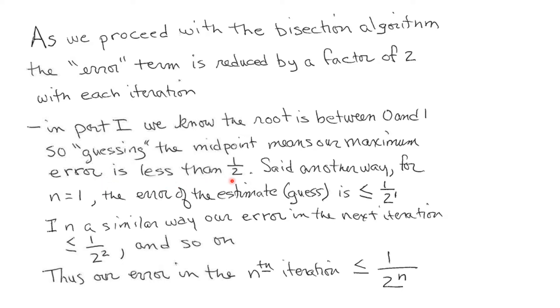You can think about this as being, how wrong could you be? Set another way, for n = 1, the error of the estimate is less than or equal to 1/2^1. In a similar way, our error in the next iteration is less than or equal to 1/2^2, and so on. Thus, our error in its nth iteration is less than or equal to 1/2^n.